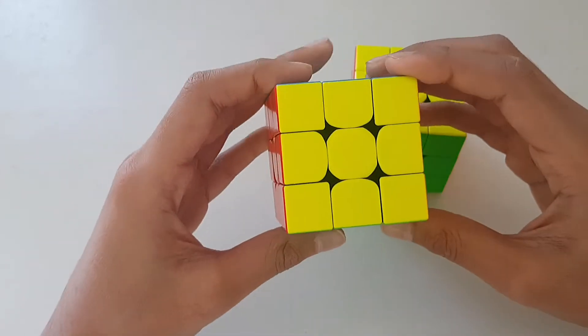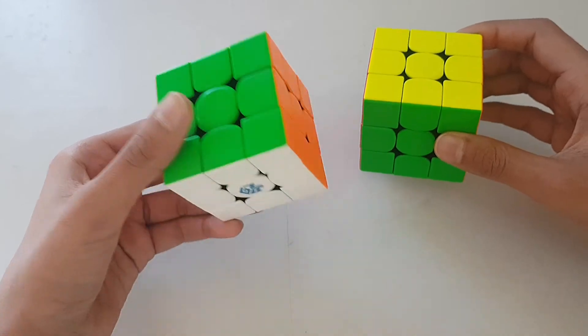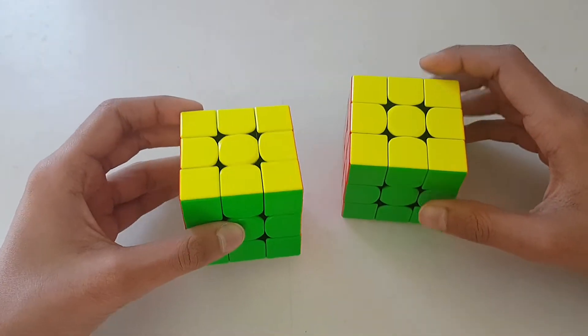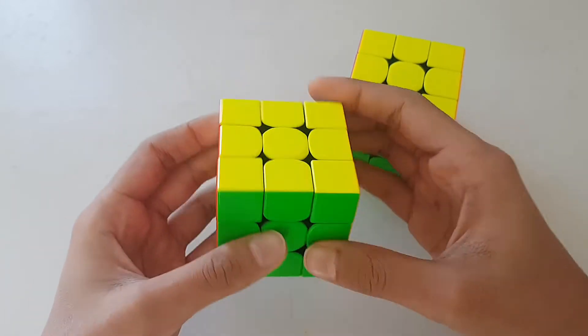So you can tell that if it takes less time to do one move, then the GAN 354 Version 2 which is 54 millimeter will be faster than the bigger cubes.